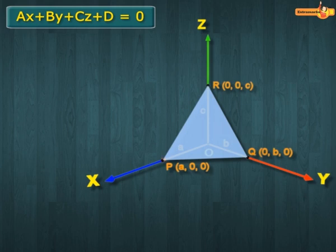As points P, Q and R lie on the plane, they are solutions of the equation of the plane.